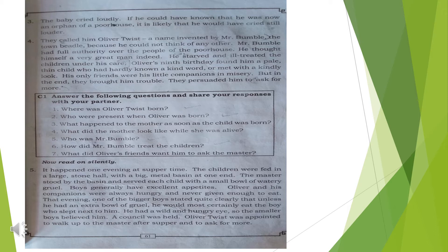They called him Oliver Twist, a name invented by Mr. Bumble, the town Beedle, because he could not think of any other name. Mr. Bumble had full authority over the people of the poor house — that orphanage was under his control. He thought of himself as a great man, but he starved and ill-treated the children under his care.